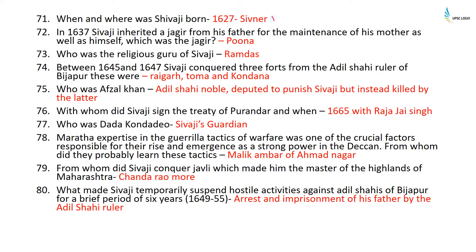The Governor-General of Bengal when the Treaty of Salbai was signed was Warren Hastings, and the treaty was signed in 1782. The British Governor-General when the Third Anglo-Maratha War concluded was Lord Hastings. The English general responsible for the annexation of Sindh was Charles Napier. The treaty with the Marathas considered a 'scrap of paper' by Warren Hastings was the Treaty of Purandar 1776. The Treaty of Amritsar 1809 was signed between Metcalfe and Maharaja Ranjit Singh.